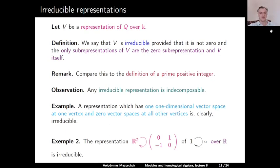Any irreducible representation is of course indecomposable. The representation with a one-dimensional vector space at one vertex and zero at all others is irreducible. Here is another example: if we take K = ℝ and the quiver with one vertex and one loop, and assign to this vertex the real vector space ℝ² with the linear operator given by the matrix [0, 1; −1, 0], this is an irreducible representation. The reason is that any non-trivial sub-representation would need to contain an eigenvector, but the characteristic polynomial λ² + 1 has no real roots, so there are no real eigenvectors.